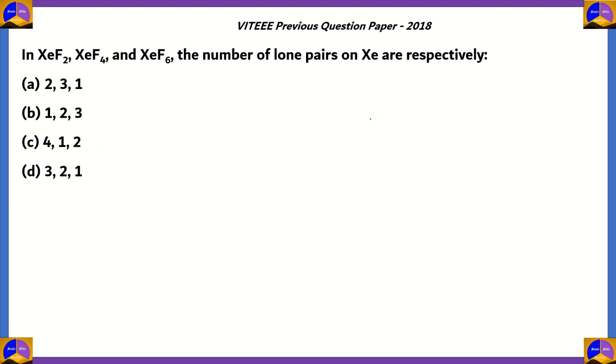Now let's look at the final question of this episode. In XeF₂, XeF₄, and XeF₆, the number of lone pairs on xenon are respectively: 2-3-1, 1-2-3, 4-1-2, or 3-2-1. Which of these is correct?